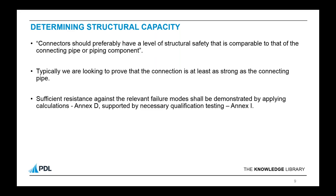Within Annex D it gives methods to determine structural capacity. Effectively the code says you need to do calculations — either design by formula or design by analysis — but then goes on to say that if you use a design by formula method, this should be checked against a more refined method, e.g. design by analysis or testing. So you're being pushed towards testing or a design by analysis — finite element analysis — route. If you go down a pure physical testing route, the code again says you need calculations to back up those testing results, which brings us back to design by analysis.